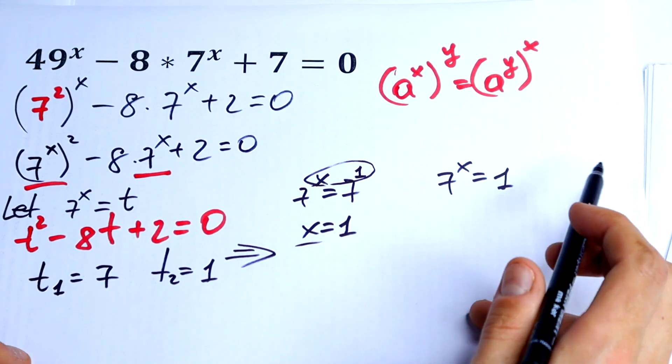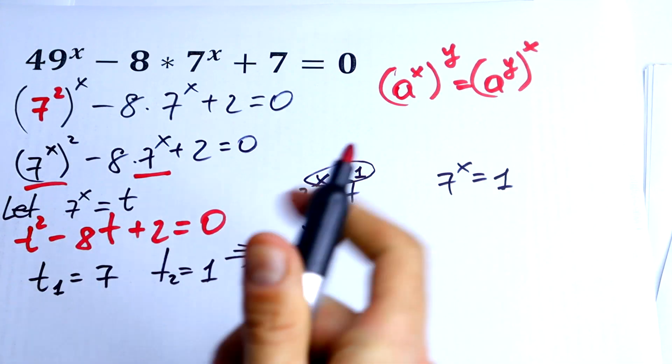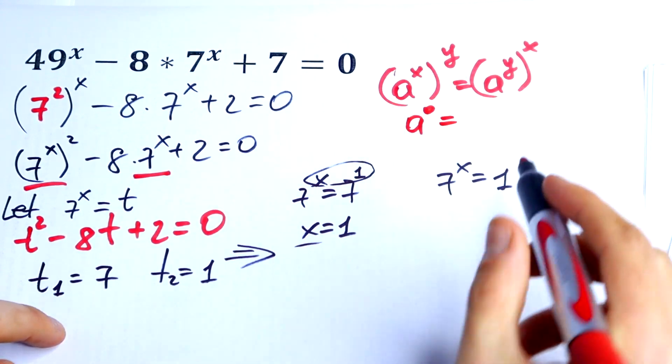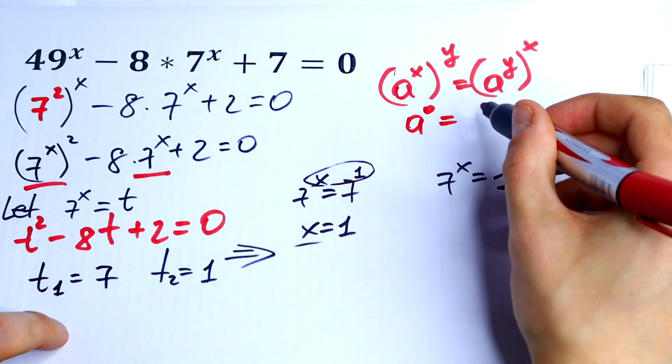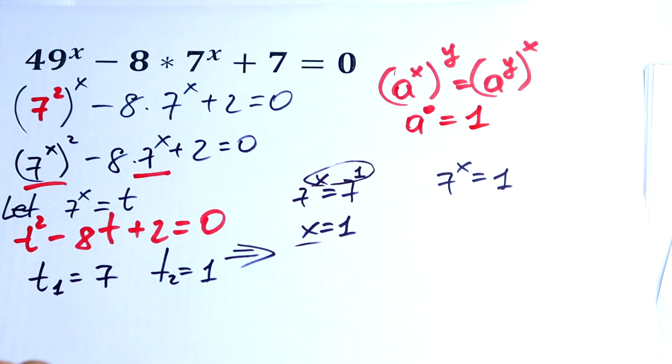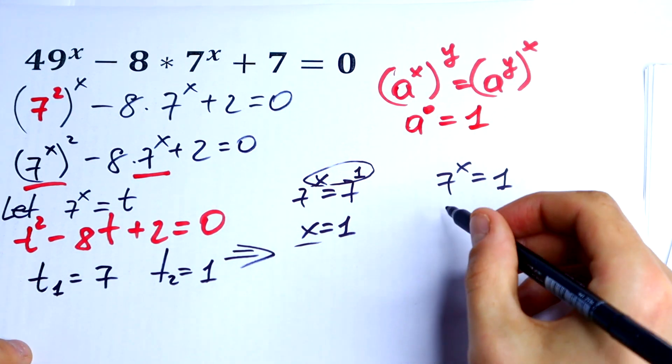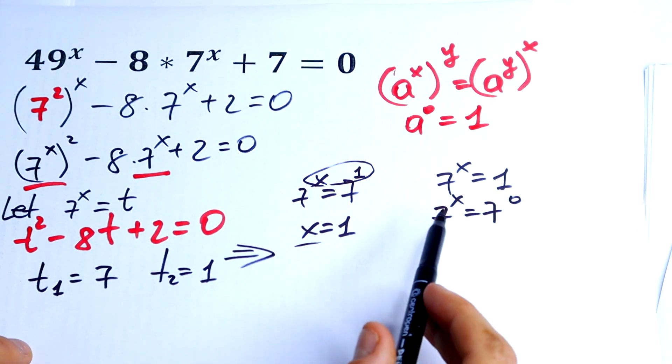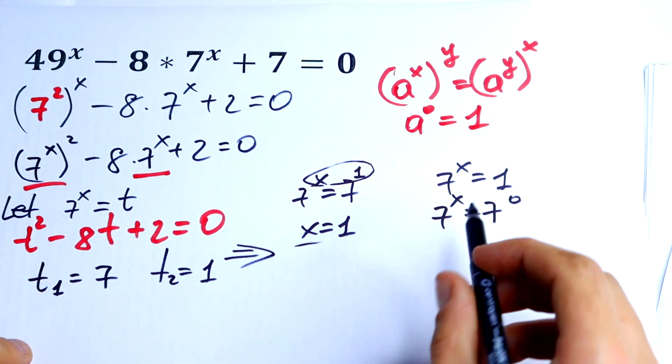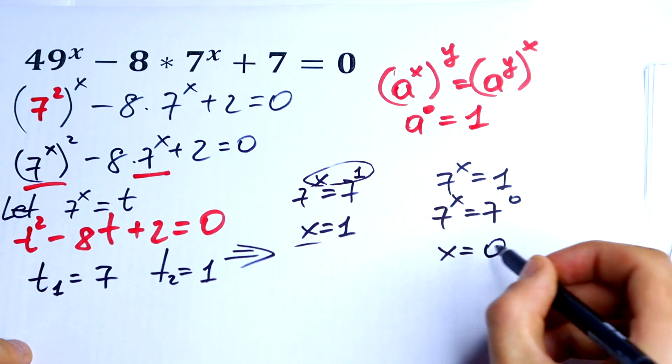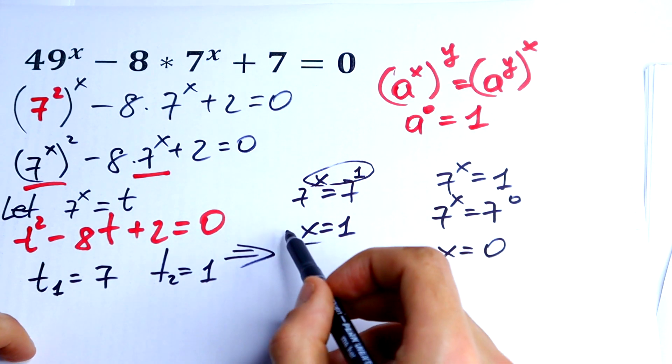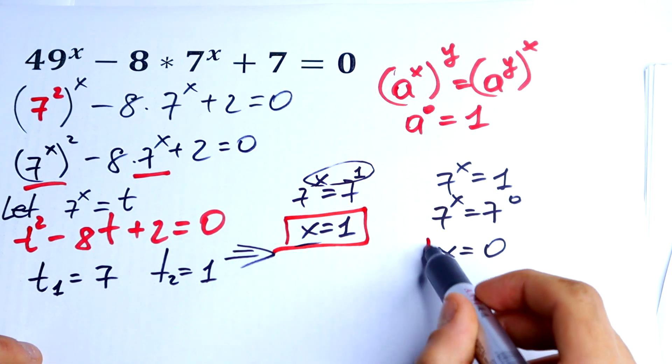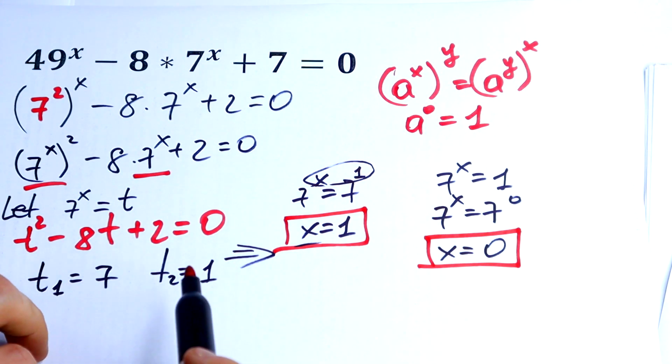Right here we can represent 1 as 7 to the power 0. For example, if we have a to the 0 power, it would be equal to 1. So we can easily represent this 1 as 7 to the 0 power, and just use this logic: x would be equal to 0. So we have two roots: x equal to 1 and x equal to 0.